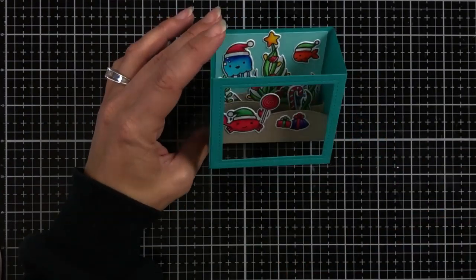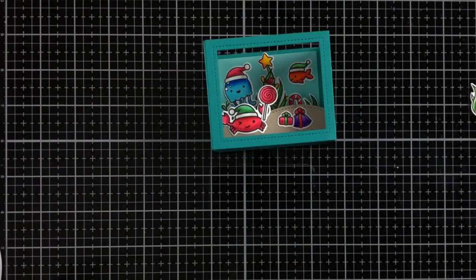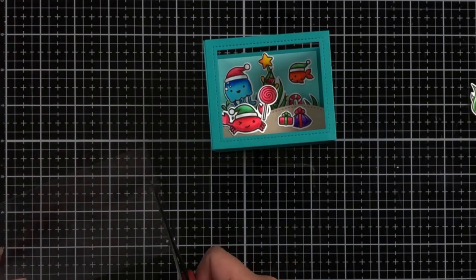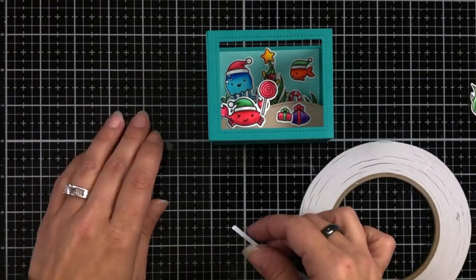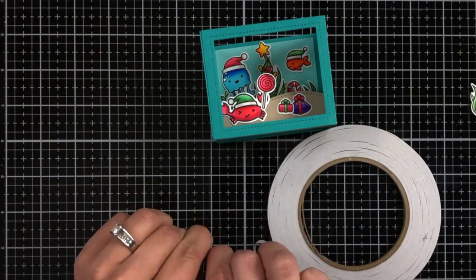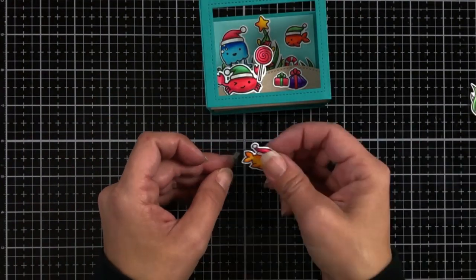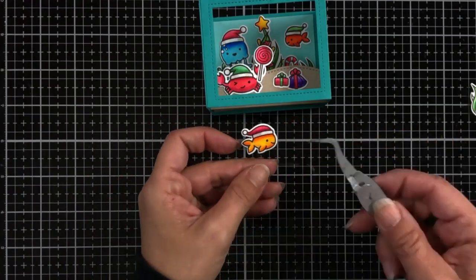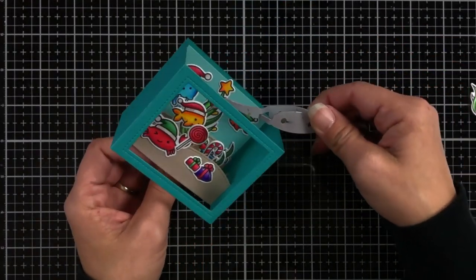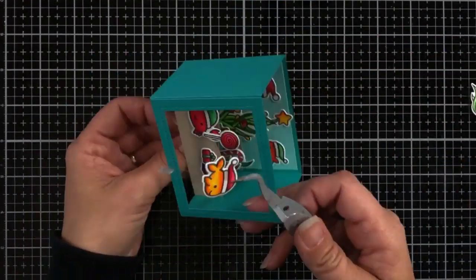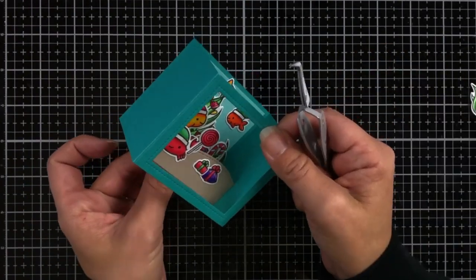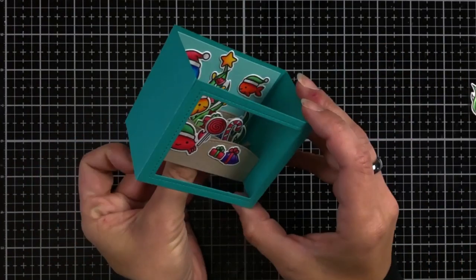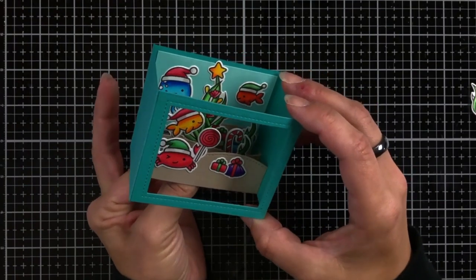Now I do have a fish that I wanted to kind of have popping up above everything. So I'm taking a piece of acetate and just trimming off a little thin strip. I'm going to add a little bit of that double-sided adhesive to the top and the bottom and stick my little Santa fish on there. And then I can attach it behind there in my insert. So it looks like he is swimming up towards the Christmas tree.